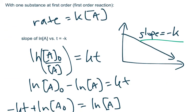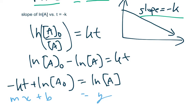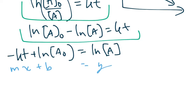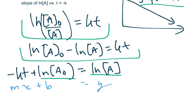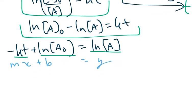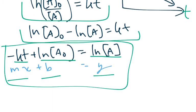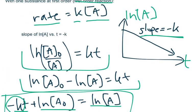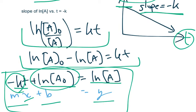Before we continue, let's review the first-order reaction. A first-order reaction has rate equals k times the concentration of A to the first, and the integrated rate law gives us: ln[A] = ln[A]₀ − kt. With t on the x-axis and ln[A] on the y-axis, this is in the form y = mx + b. The slope will be negative k, and the y-intercept will be ln of the initial concentration of A.